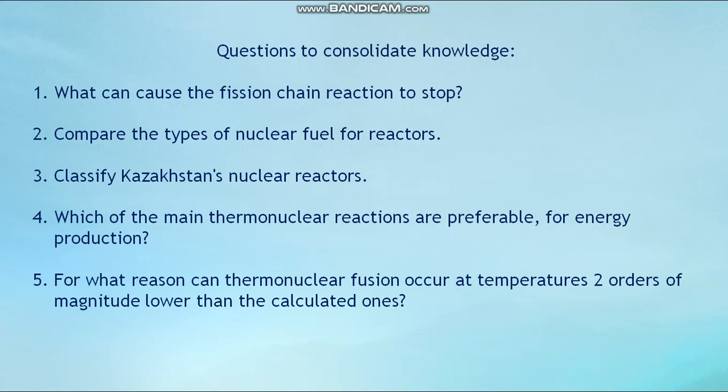Questions to consolidate knowledge: First, what can cause an efficient chain reaction to stop? Second, compare the types of nuclear fuel for reactors. Third, classify Kazakhstan's nuclear reactors. Fourth, which thermonuclear reactions are preferable for energy production? Fifth, for what reason can thermonuclear fusion occur at temperatures orders of magnitude lower than the calculated ones? Thank you for your attention.